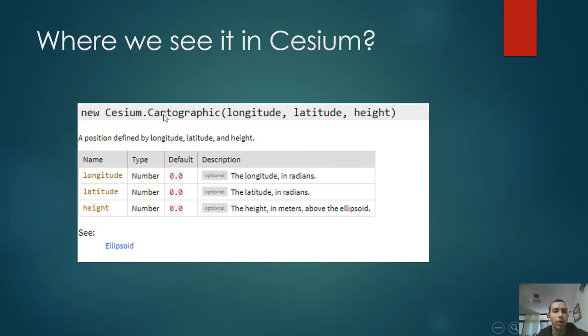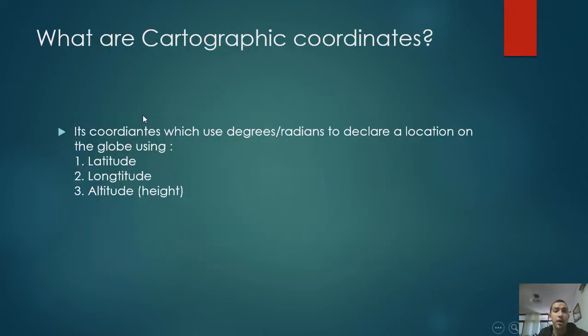Where we see them: everywhere we see cartographic coordinates. There is a cartographic class which takes longitude, latitude, and height, and they are measured in radians. So what are cartographic coordinates? It's coordinates which use degrees or radians to declare a location on the globe using latitude, longitude, and altitude.